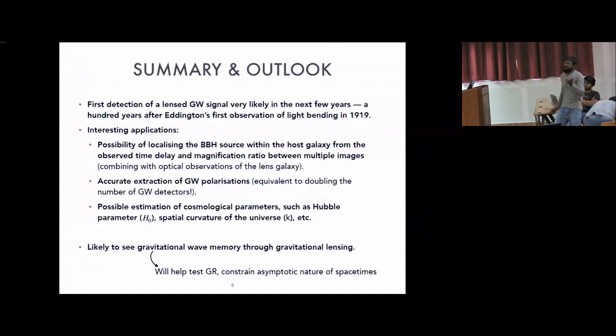So what is the summary and outlook? Though we haven't seen any strong evidence for lensing in our data, the astrophysical calculations say that very soon—because anyway our detector sensitivity is going up and up—correspondingly the sources will increase, and hence the optical depth for producing strong lensing will increase. So very soon we expect to see such lensed merger events.